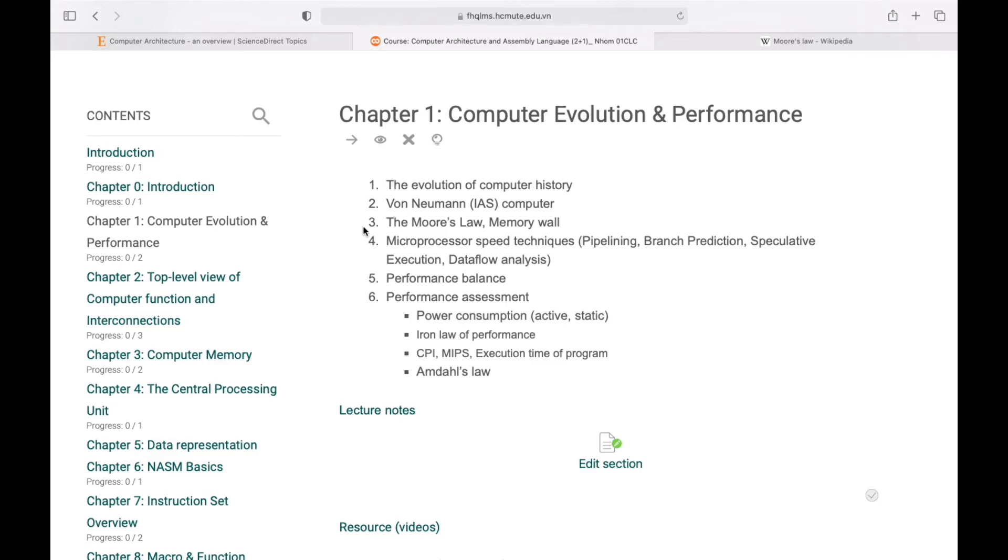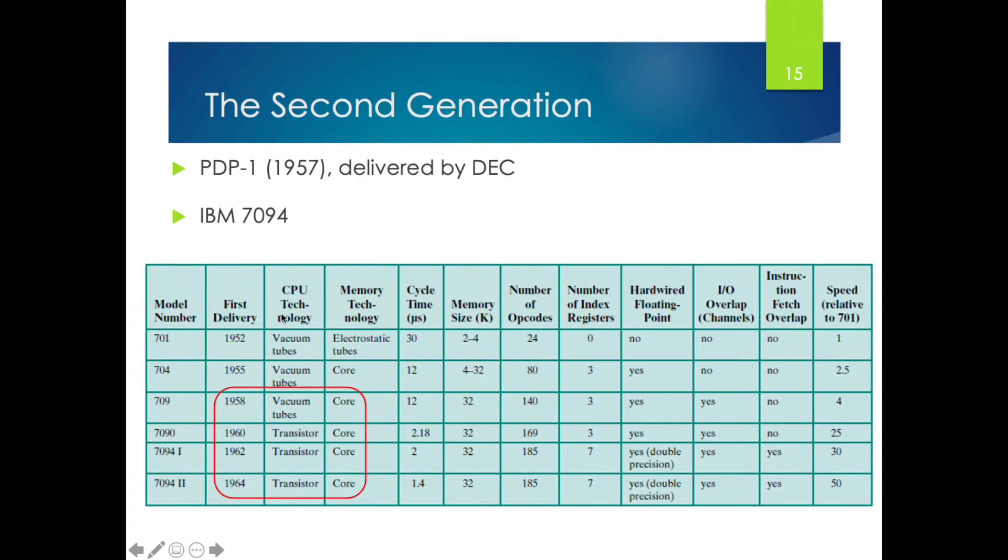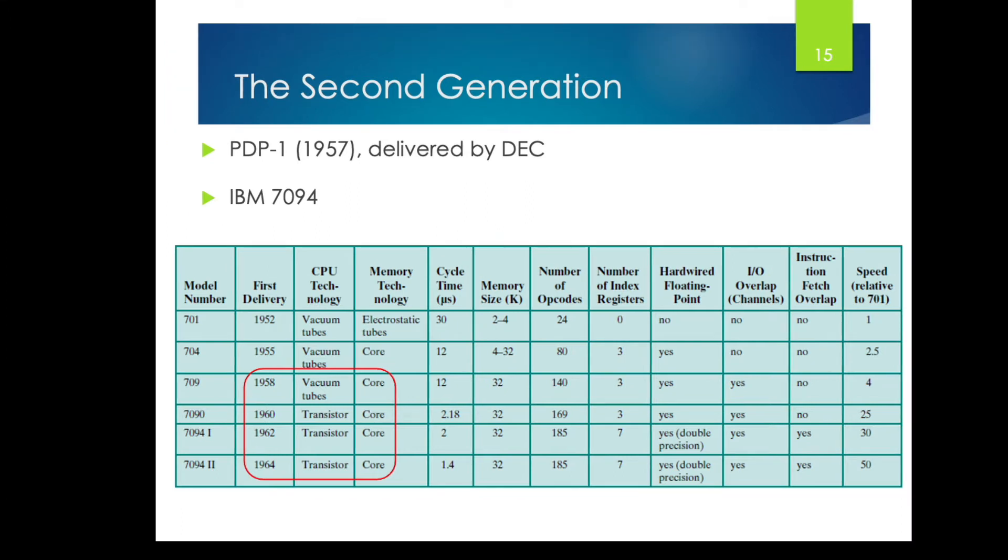We are moving to the third item in our chapter. We will talk about Moore's Law and the memory wall problem. But before diving into Moore's Law, I will talk about the fabrications of computer hardware, focused on the chip production. The slide shows a listing of computers in the second generation, looking closely at the transitions between generations.